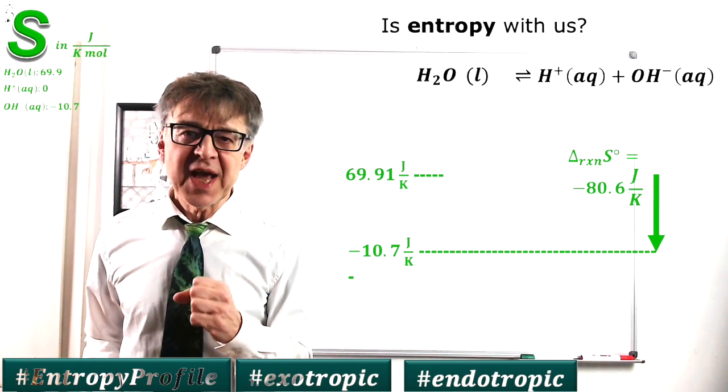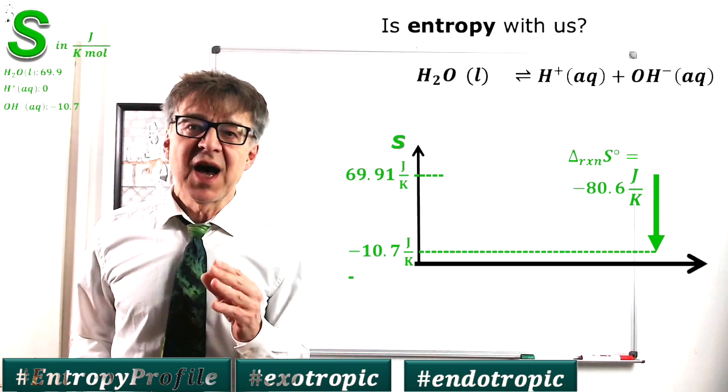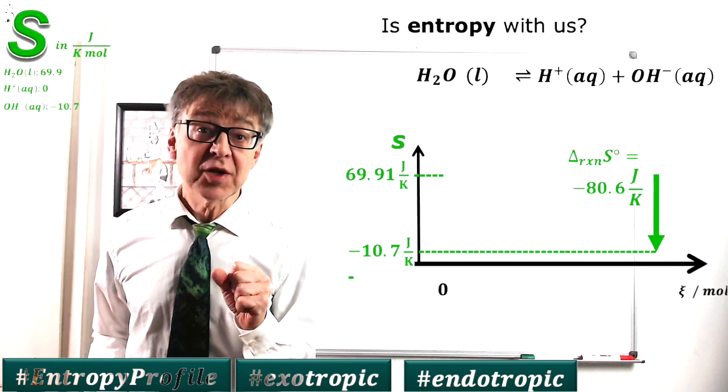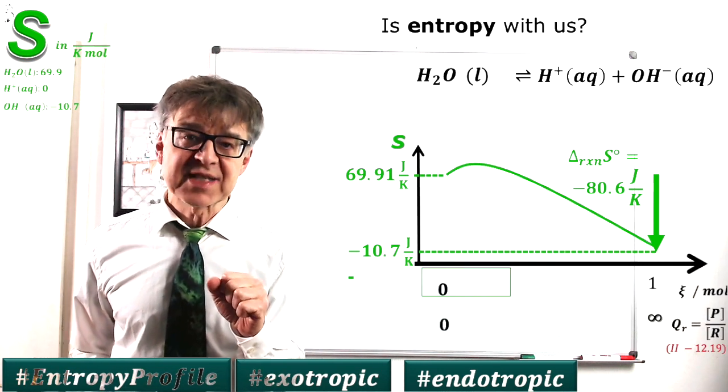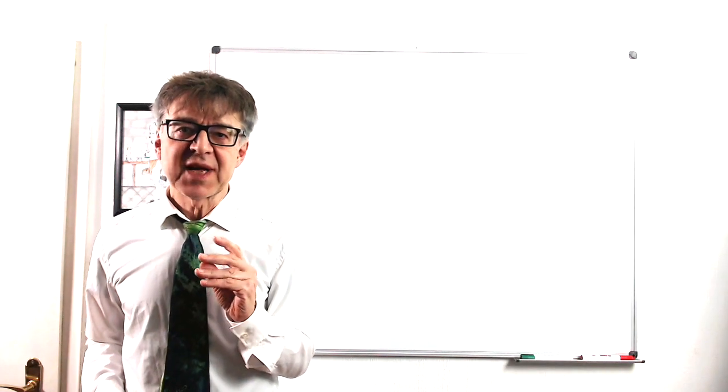During the reaction, there is a mixture of both reactant and products and mixtures usually are richer in entropy than pure compounds. This means that we do not have a straight line profile, but we may have a maximum.